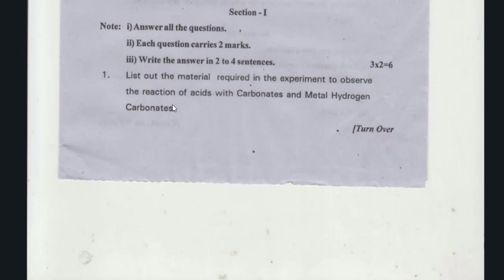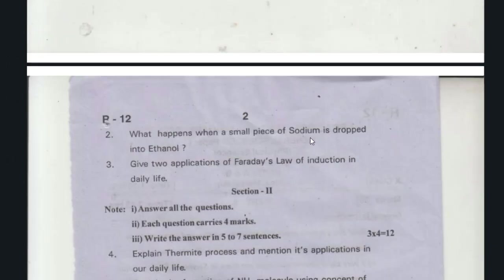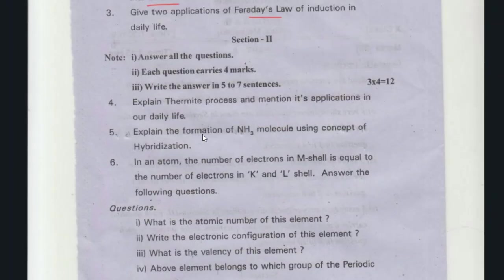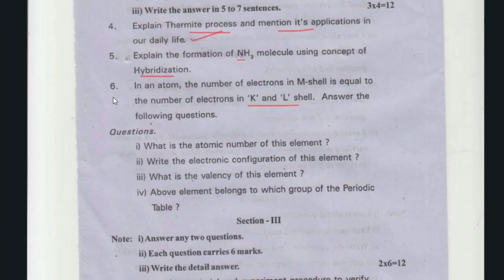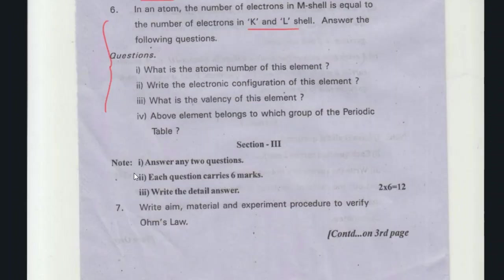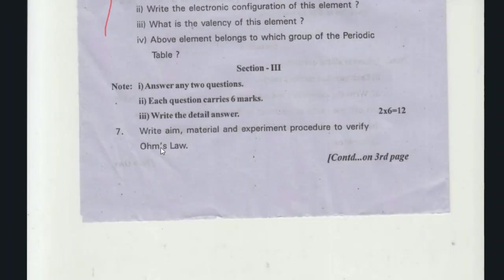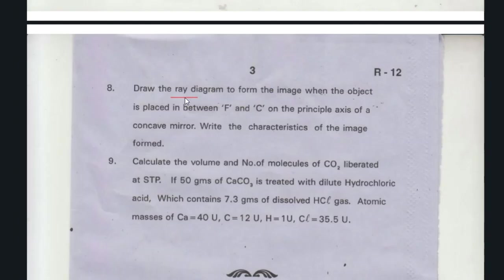List the materials required in the experiment to observe the reaction of acids with carbonates and metal hydrogen carbonates. What happens when a small piece of sodium is dropped into ethanol? Application of Faraday's law of induction in daily life. Section 2: Explain thermite process and mention its application. Explain the formation of NH3 molecule using the concept of hybridization. In an atom, the number of electrons in M shell equals the number of electrons in K and L. Table is a paragraph-type question. Section 3: Ohm's law experiment, draw a ray diagram.